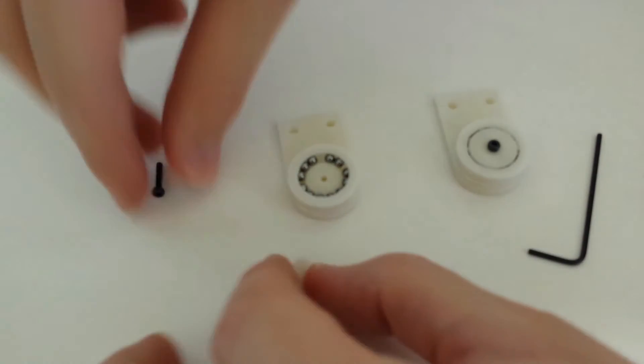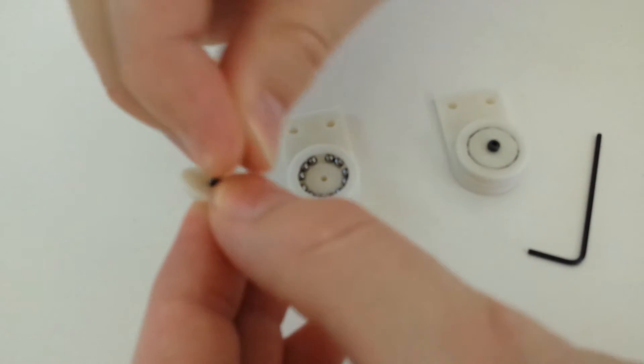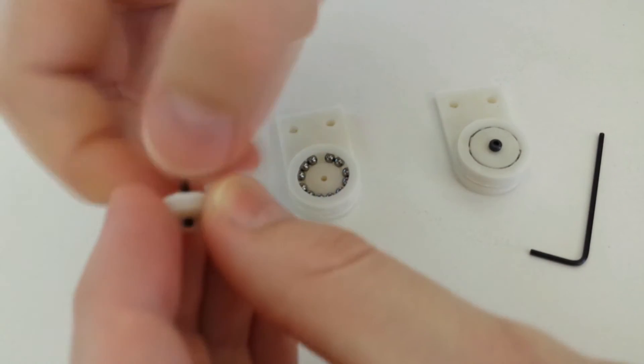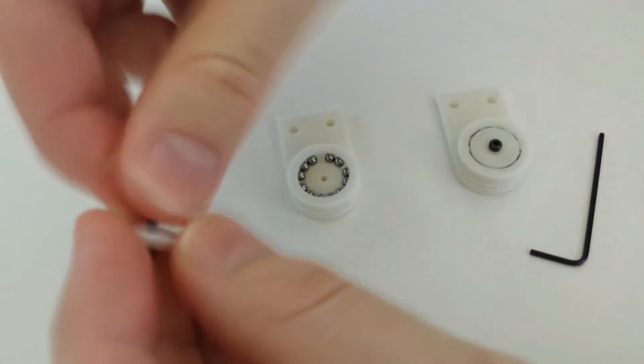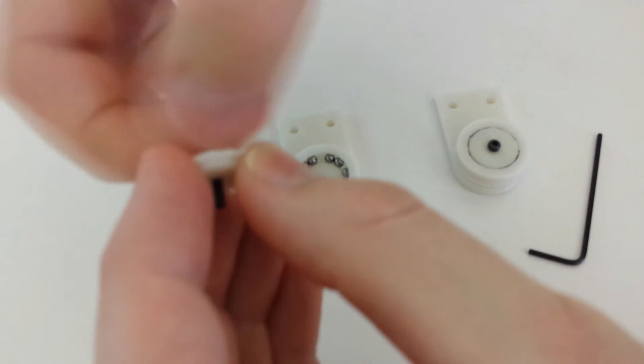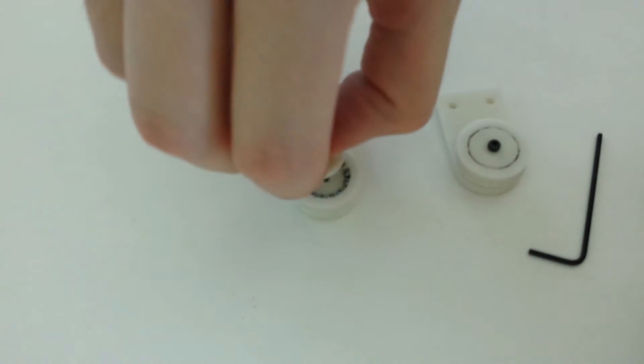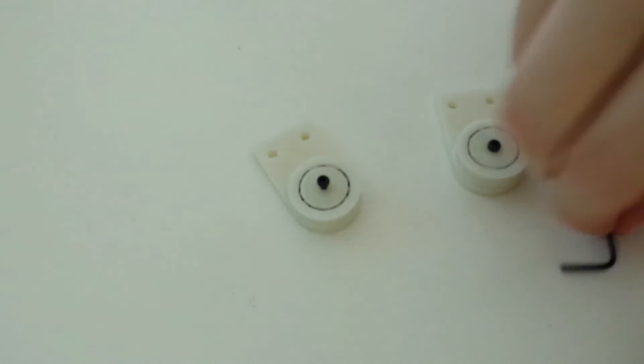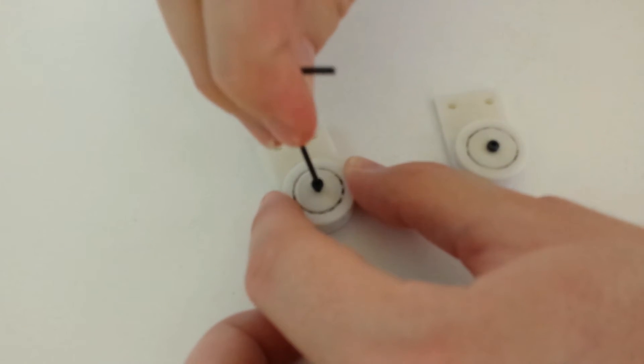Great. And stick my M2 bolt through the top piece. And slot it on in. Grab my Allen key, tighten it down nice and tight.